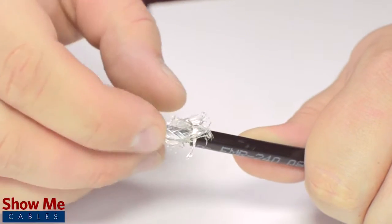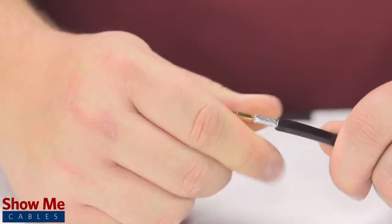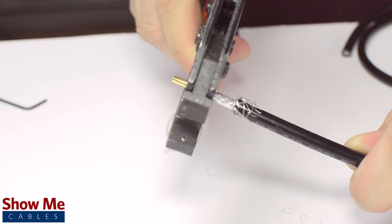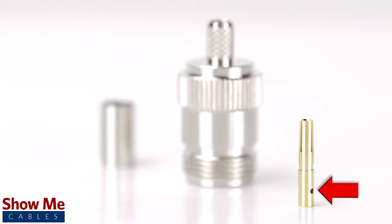Pull back the braided shield and insert the pin onto the center conductor. Crimp the female pin using the crimp tool. Many crimp pins will have a small well to allow for soldering. It is not necessary for installation, but it is recommended when possible for optimal signal strength.